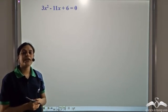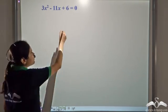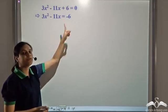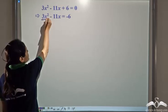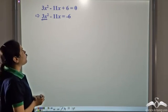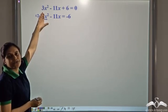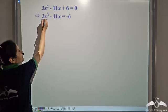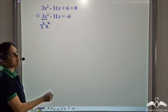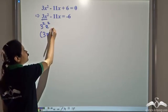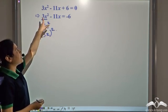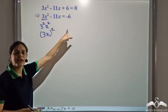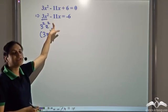Now we have a new equation. Let us try and solve it using the method of completing the square. First take the constant term to the right hand side. We have 3x squared minus 11x equal to negative 6. Now 3x squared is not a perfect square. We can either divide by 3 or multiply by 3. If we multiply by 3, it becomes 3 squared times x squared, that is 3x whole square, which is a perfect square. So let us multiply both sides of the equation by 3.